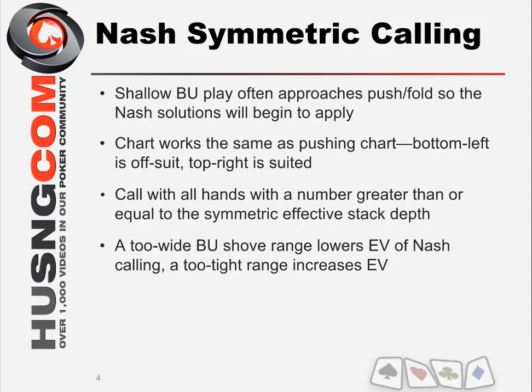Three-handed, that is not actually a property of Nash equilibrium. The property is that if all three of us are playing Nash, none of us can improve our equity. So in this context, talking about the button range: if we're calling Nash in the big blind, and the small blind is also calling Nash, and the button starts changing his range — if the button makes his range wider than Nash, it'll actually lower our equity as the big blind.